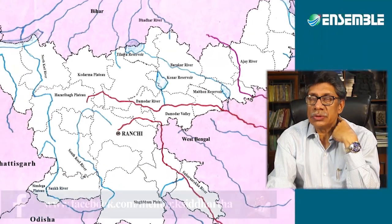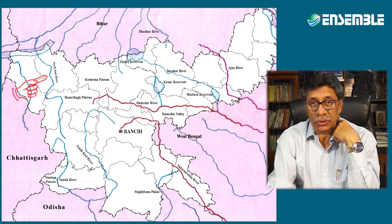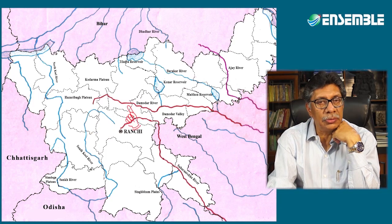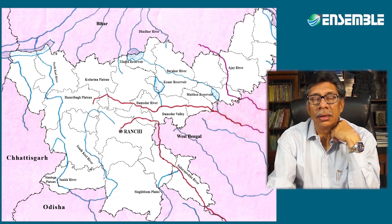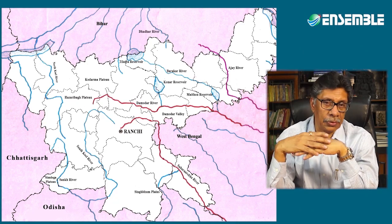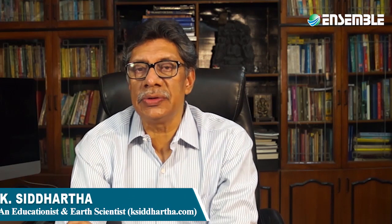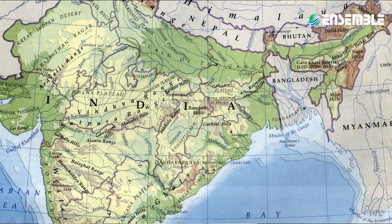The Chhotanagpur Plateau is known for radial drainage, with North Koel, South Koel, Damodar, Suvarnarekha, and Barakar rivers radiating away from it. The Eastern Highlands continue far eastward into the North East as the Shillong Plateau or the Meghalaya Plateau. The gap that lies between the Rajmahal Hills and the Shillong Plateau is called the Rajmahal-Garo Gap.